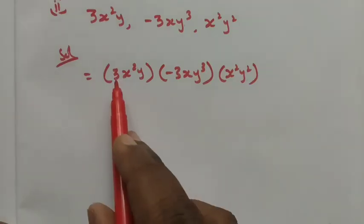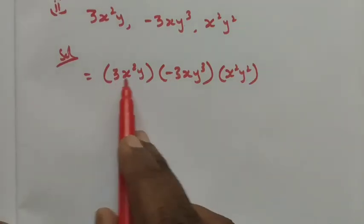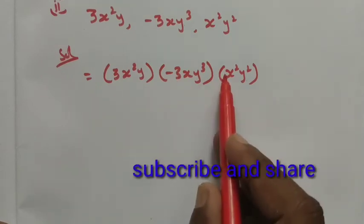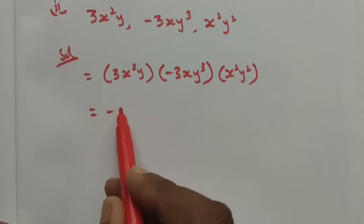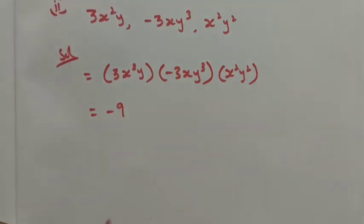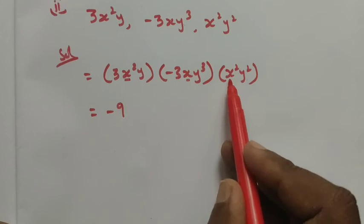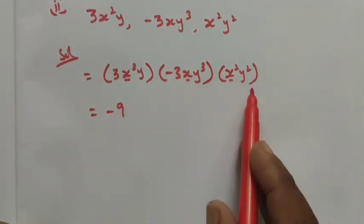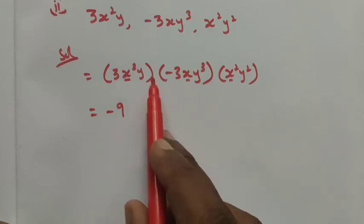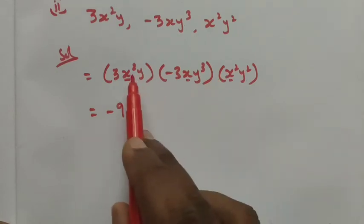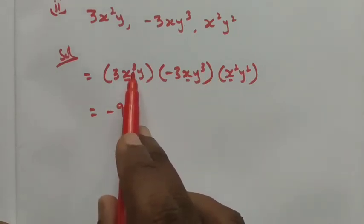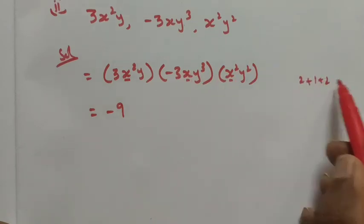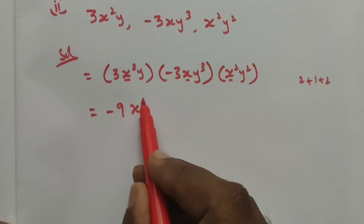First, multiply the numerical factors: 3 into minus 3 is minus 9, and minus 9 into 1 (since the last coefficient is 1) is minus 9. For x: the powers are 2, 1, and 2. By the law of exponents, 2 plus 1 plus 2 equals 5, so we get x⁵.